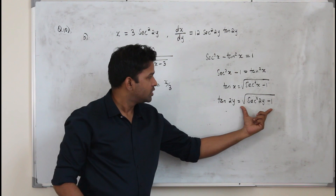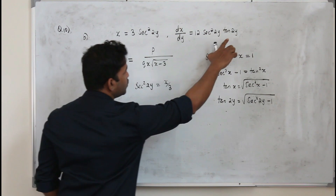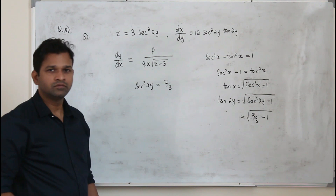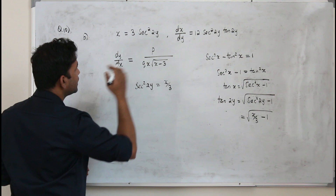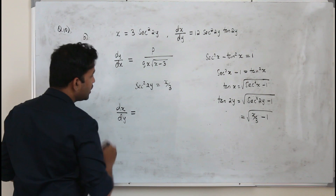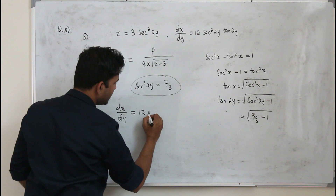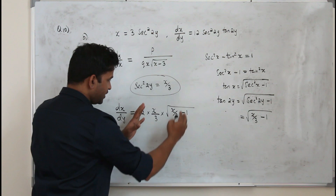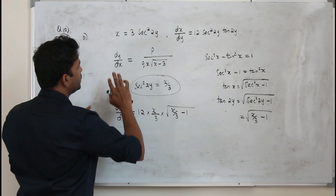Using this identity, tan(2y) equals √(sec²(2y) − 1). We know sec squared(2y) is x/3, so tan(2y) = √(x/3 − 1). First convert everything in terms of x, then flip both sides. Take dx/dy = 12 sec squared(2y) times tan(2y). Replacing sec squared(2y) by x/3 and tan(2y) by √(x/3 − 1), then simplify the whole expression and flip both sides to get dy/dx.